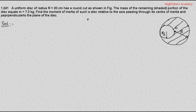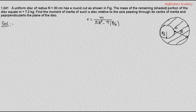The mass given in the question is of the shaded portion, so the area density of the shaded portion is sigma, which equals the mass of the shaded portion divided by the area of the shaded portion. Its value is 4m divided by 3πR².